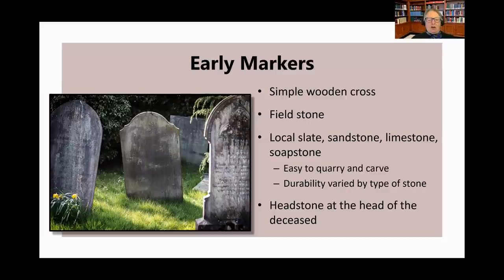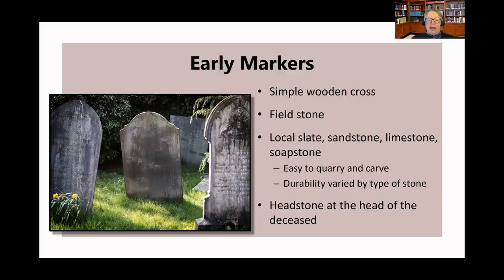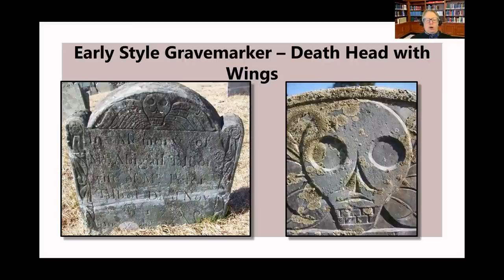Let's look at early markers. The very earliest grave markers were quite simple — perhaps a simple wooden cross or a piece of fieldstone. When the first carved headstones were created, they were made of stone that was local and easy to quarry and carve: slate, limestone, sandstone, even soapstone were typical materials, though durability varied considerably. The stones were placed at the head of the grave, and the grave was oriented east to west so that at the last judgment the deceased could sit up and face the east.